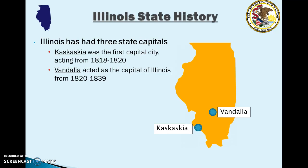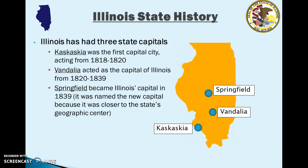In 1839 the capital was moved to Springfield, which is still Illinois's capital to this day. The main reason Springfield was named the new capital was because it's closer to the state's geographic center. You can see in the map that Springfield is really close to dead center in the state, and that was one of the driving reasons behind moving the capital from Vandalia to Springfield.